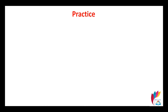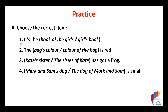Now let's do some practice. Exercise one — choose the correct item. Do we say 'the girls' book' or 'the book of the girls'? Is it a thing or a person? Next: 'the bag's color' or 'the color of the bag is red'? The bag is a thing. Also: 'Kate's sister' or 'the sister of Kate'? And 'Mark and Sam's dog' or 'the dog of Mark and Sam is small'? Leave your answers in the comments.